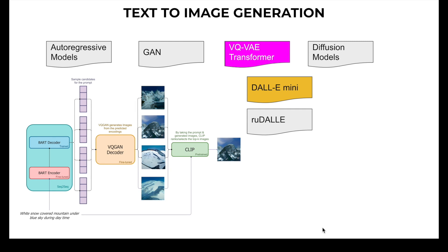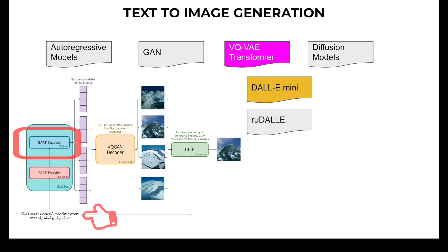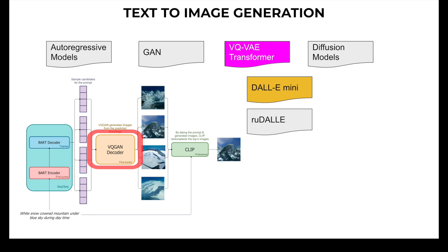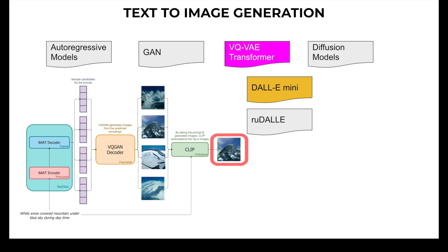The inference pipeline for DALL-E Mini works as follows: the caption is encoded through the BART encoder, and a beginning-of-sequence (BOS) token is fed through the BART decoder. Image tokens are sampled sequentially based on the decoder's predicted distribution over the next token. The sequence of image tokens is then decoded through the VQGAN decoder, and finally CLIP from OpenAI is used to select the best generated images based on higher result probabilities.